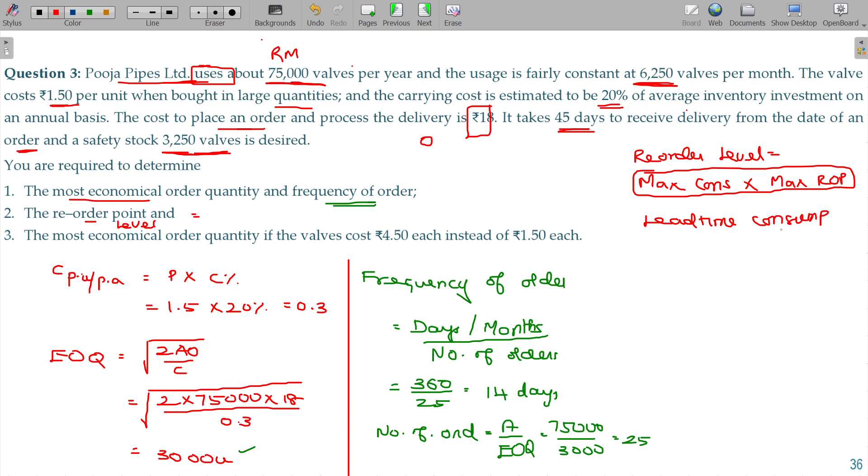Lead time - it takes 45 days to receive, so 45 days lead time. 45 days consumption: 75,000 consumed for 360 days.